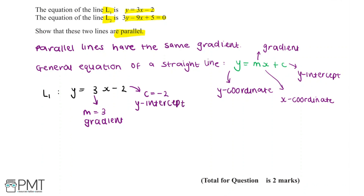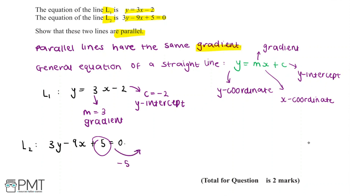To prove that these lines are parallel, we need to focus on the gradient, so we need to show that L2 has the same value for m. To do this, we need to put L2 in the form y equals mx plus c, which means making y the subject. We're given 3y minus 9x plus 5 equals 0, so the first thing we do is move the plus 5 to the other side by subtracting 5 from each side, leaving us with 3y minus 9x equals minus 5.